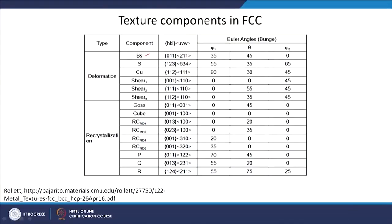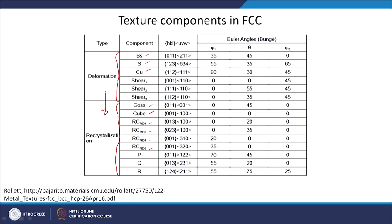These are the texture components for face-centered cubic materials: brass, S, copper, shear component, Gauss, cube, and some more. The first group are deformation texture components arising from the deformation process; the other components appear when you do static recrystallization of the deformed material — Gauss, cube, rotated cube. Rotated cube means you rotate the cube through any axis — Rd1, Rd2, Nd1, Nd2, and so on. The Euler angles for all these texture components are listed, and cube should always have 0, 0, 0 since the unit cell is already aligned with the sample geometry. Gauss is just a rotation of 45 degrees on one angle — that is the capital Phi angle.